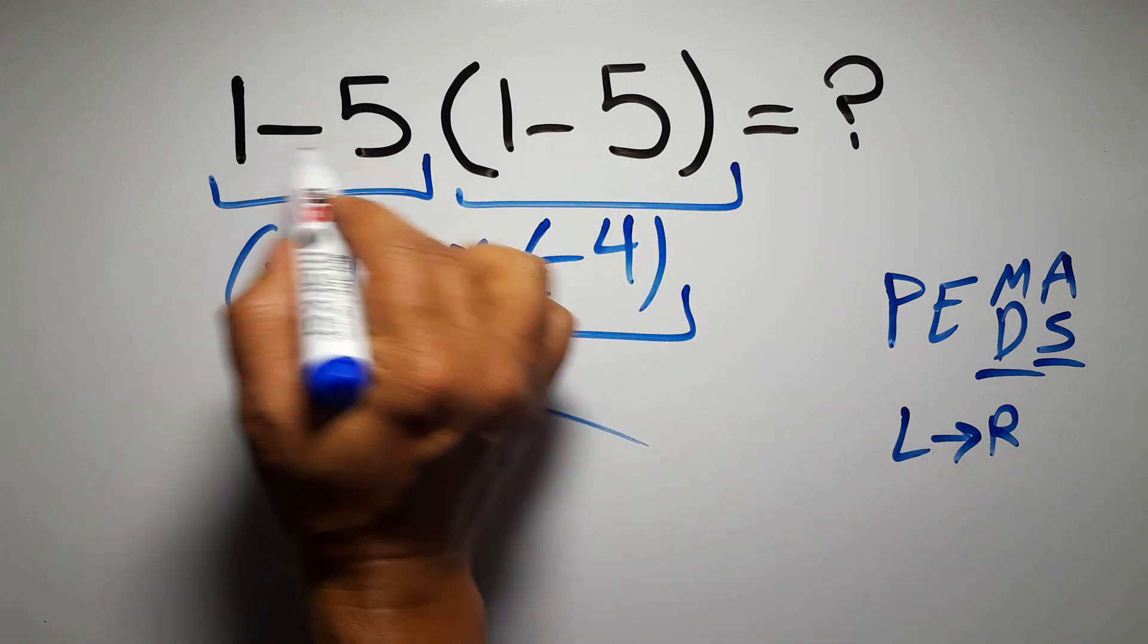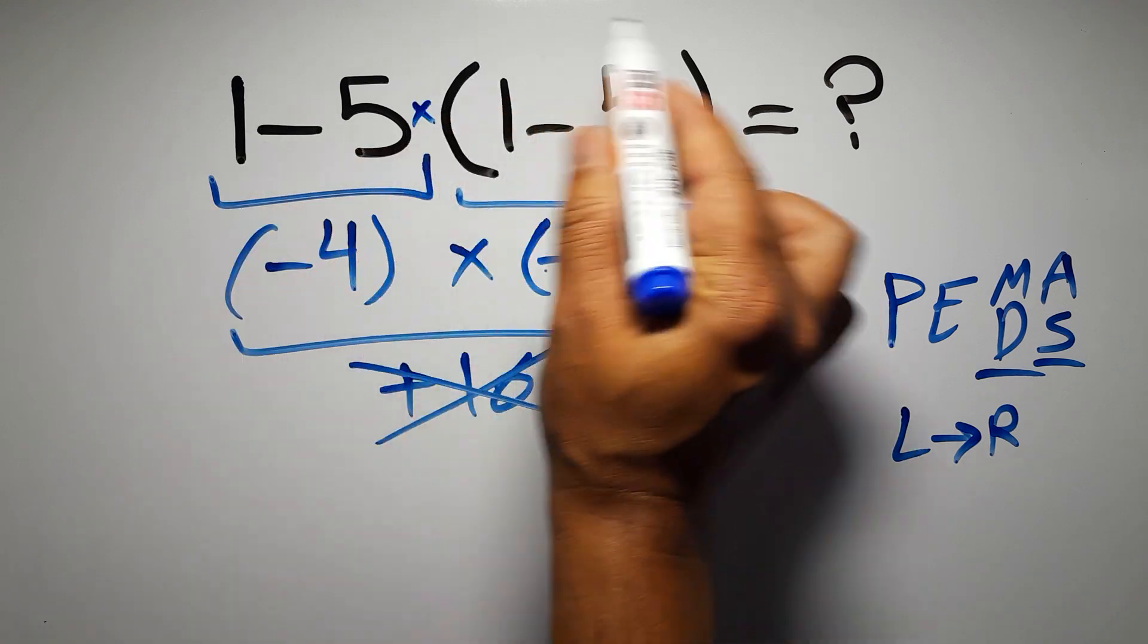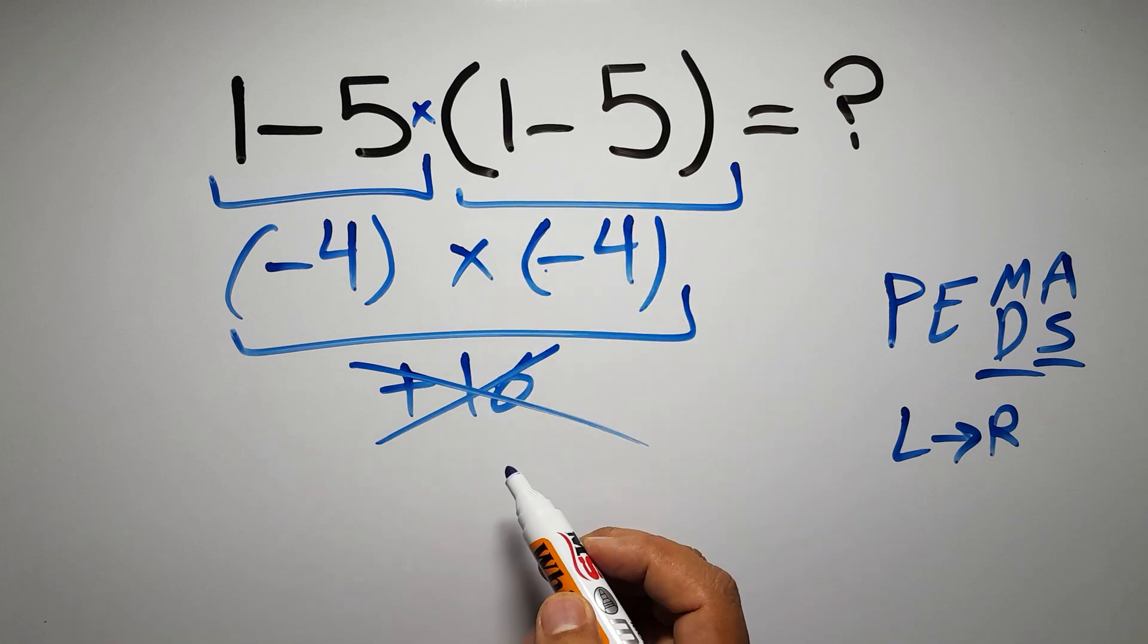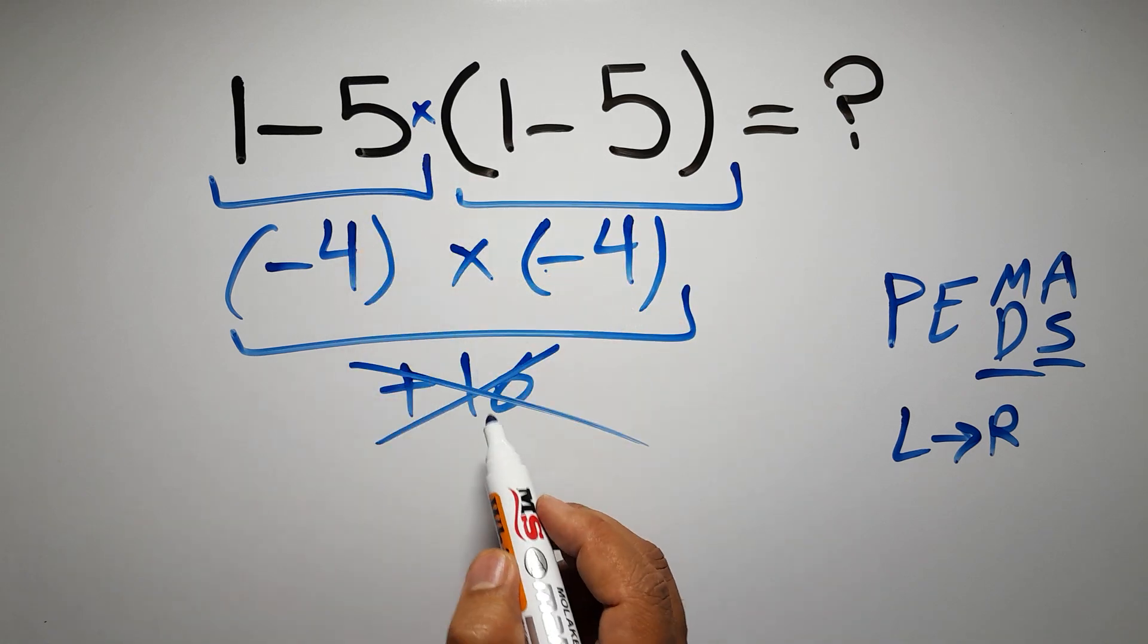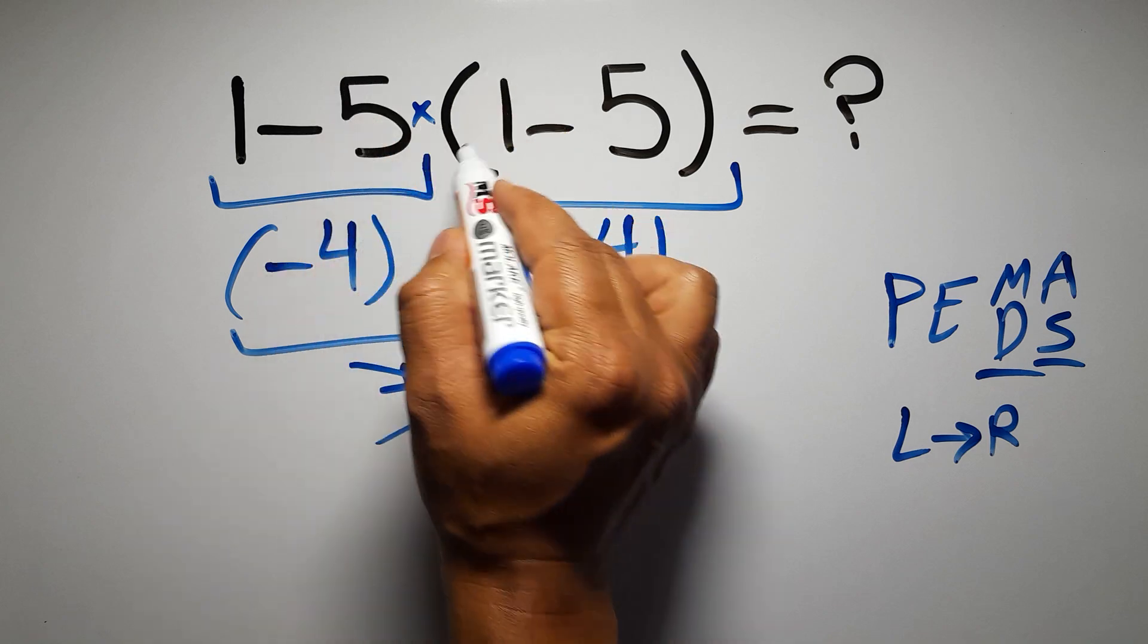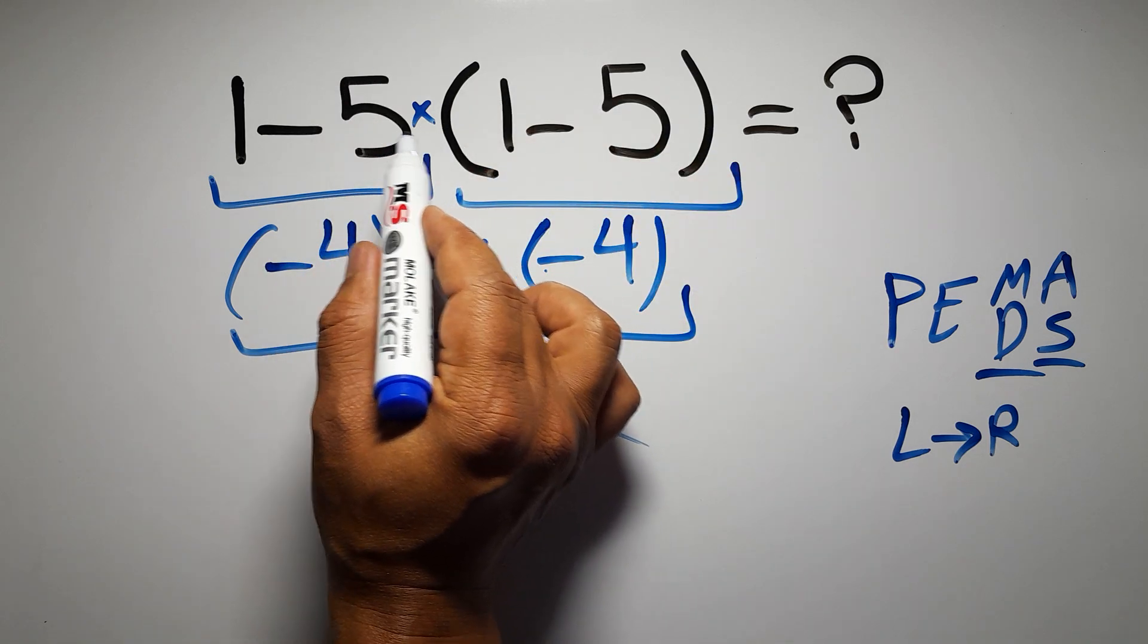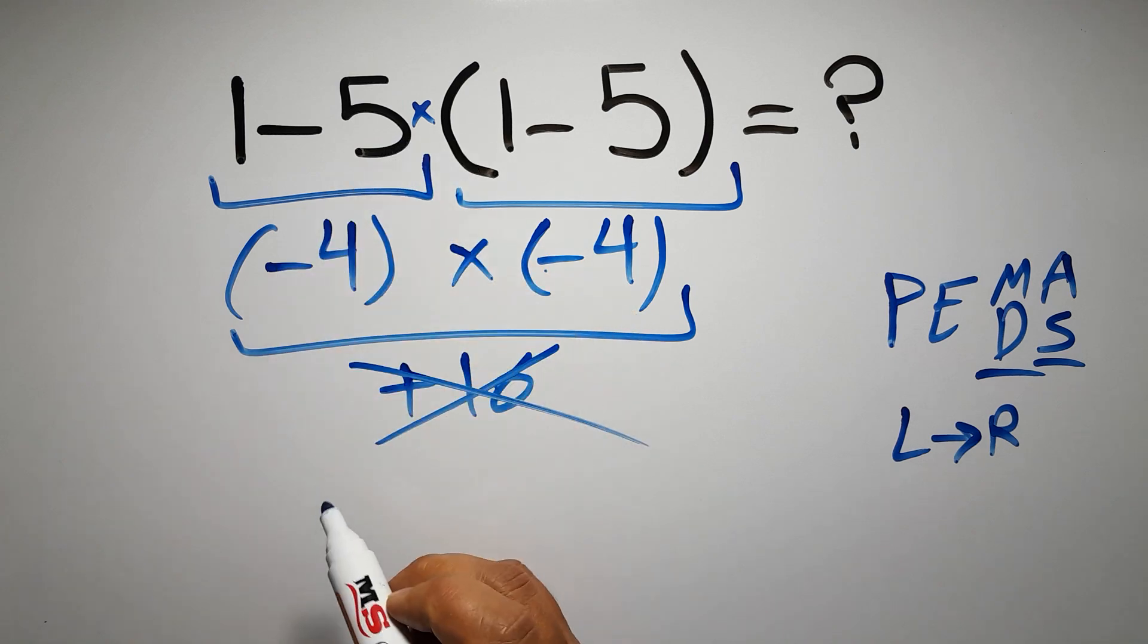In this expression, we have 1 subtraction, 1 multiplication, and 1 parentheses. Inside these parentheses, we have 1 subtraction. Here we have a multiplication, because in mathematics, when a number is placed next to parentheses, it means multiplication, and we usually don't write the multiplication sign for brevity.